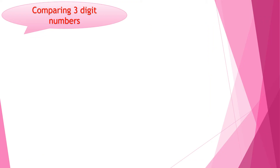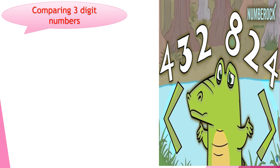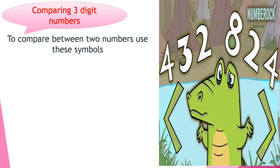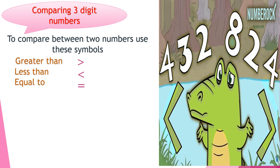Comparing three-digit numbers. The crocodile always eats the greatest number. To compare between two numbers, use these symbols: greater than, less than, and equal to. Example number 1: 71 and 38. We have two digits each. Look at the tens place: 7 and 3. 7 is greater than 3, so 71 is greater than 38.